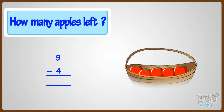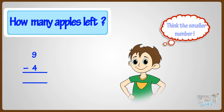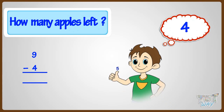So we have to subtract four from nine. Think the smaller number, that is four. And now count up to nine on your fingers. Five, six, seven, eight, nine.